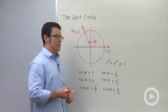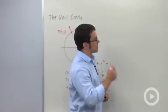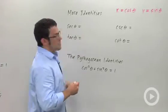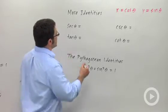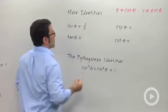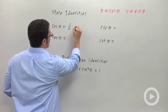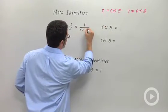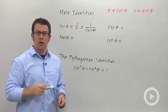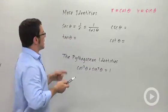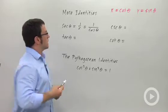Let's develop some identities with these new functions. So because secant theta is defined as 1 over x, we can use the fact that x equals cosine theta to write 1 over cosine theta. So secant theta equals 1 over cosine theta, and that's a really useful identity when you're trying to understand what secant theta is.